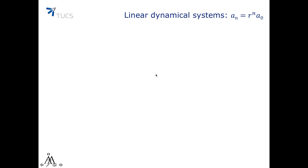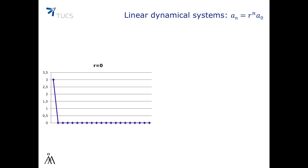Let's see the behavior of the sequence of numbers generated by linear dynamical systems in a few simple cases. If r = 0, then obviously the whole sequence except the first term is constant and equal to 0. In this case, aₙ = 0ⁿ·a₀, which is obviously 0 for all n ≥ 1.